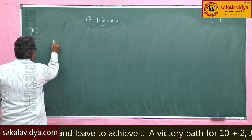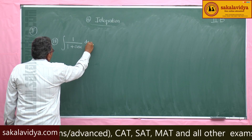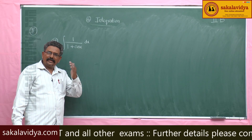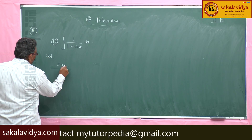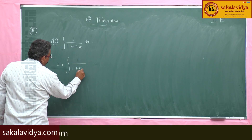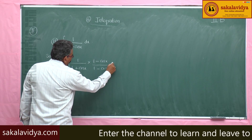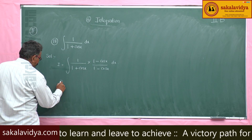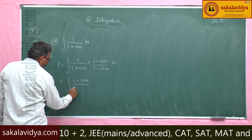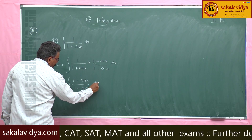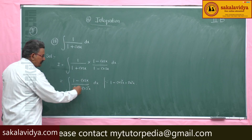Next problem: evaluate the integral of 1/(1 + cosx) dx. Multiply both numerator and denominator by (1 - cosx). So I equals the integral of (1 - cosx) / [(1 + cosx)(1 - cosx)] dx, which gives (1 - cosx)/(1 - cos²x). We know that 1 - cos²x = sin²x, so this is replaced by sin²x.